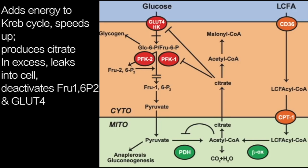If there is a buildup of citrate in the cell fluid, it will directly deactivate phosphofructokinase 1 and also deactivate GLUT4. Why would it do that?